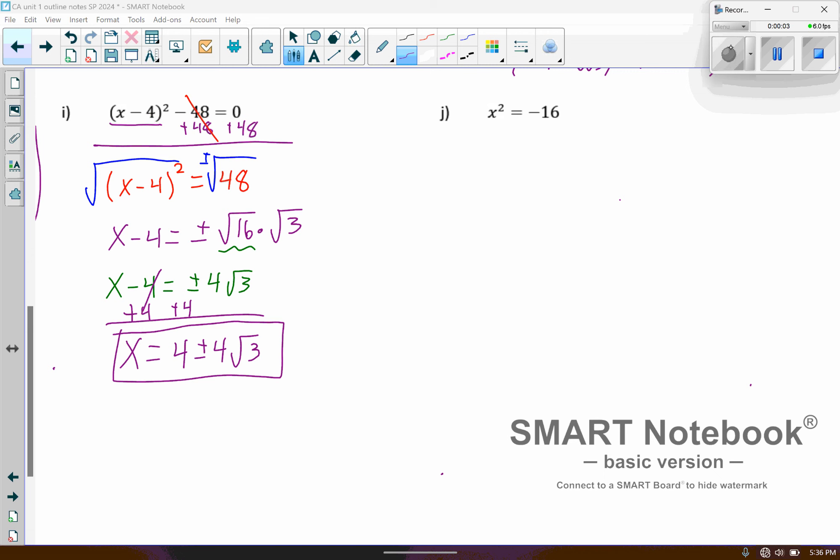Okay, continuing where we left off, we're solving using the square root property. What you're going to notice on these next couple of examples is that we're going to have to square root negative values, and so we're going to get those complex solutions, those values that involve the imaginary value i.